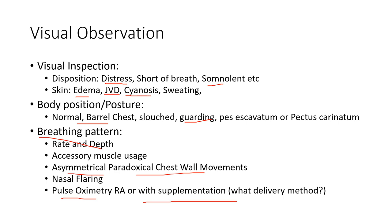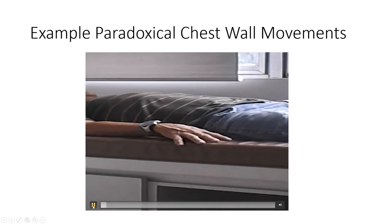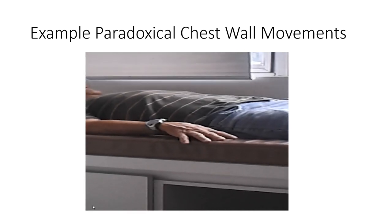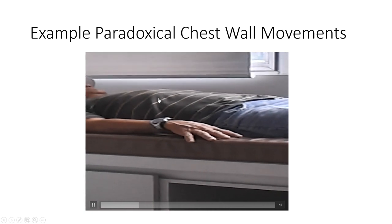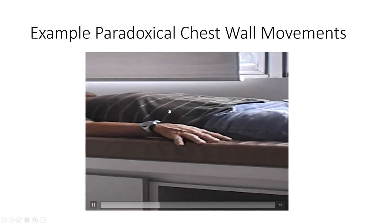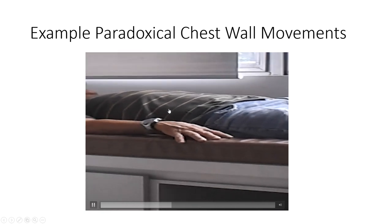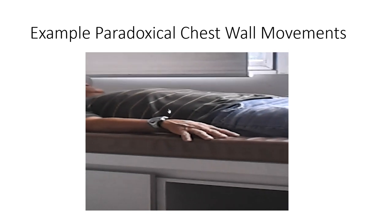Here's an example of what true paradoxical chest wall movement looks like — this is someone with a real abnormal breathing pattern. As you can see, when this patient breathes in, their chest wall rises but their abdomen sucks in. That's not a normal pattern. This patient had very severe COPD — just an example of what we would see there.